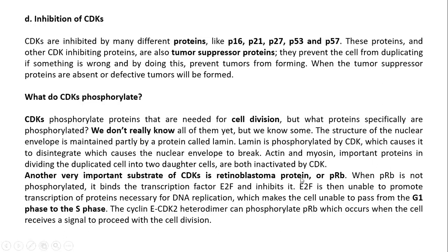Another very important substrate of the CDK is the Retinoblastoma protein, which we abbreviate as PRB. When Retinoblastoma protein is not phosphorylated, it will bind with the transcription factor E2F and inhibit it, so transcription will stop. The transcription factor is unable to promote transcription of proteins necessary for DNA replication, which makes the cell unable to pass from G1 into S phase. The cell will stop there and will not proceed to the next phase.